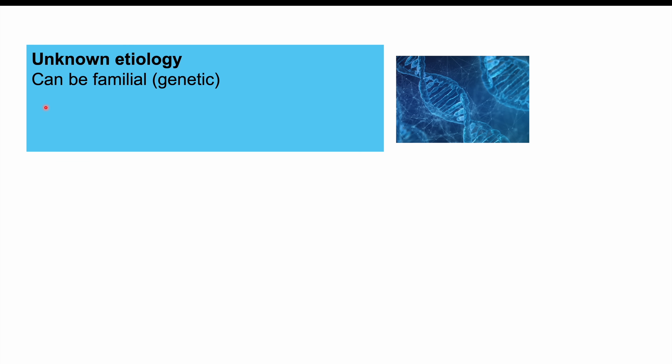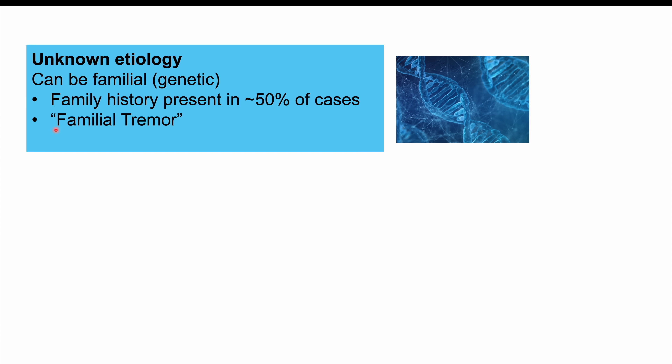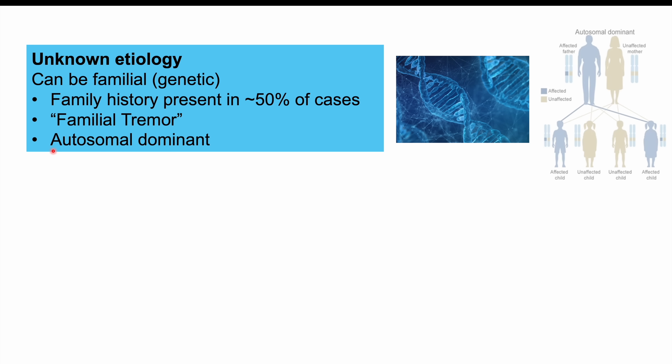Some genes have been proposed to be affected in this condition. Genetics are likely a very strong factor, as patients with essential tremor often have a family history of the condition in a first-degree relative, and family history is present in 50% of cases. This can be referred to as familial tremor. The heritability is likely autosomal dominant — only one affected allele is needed — so 50% of children of an affected parent will be affected.